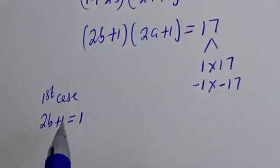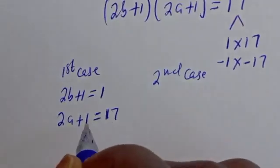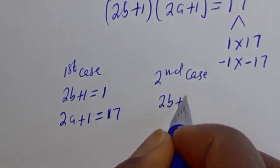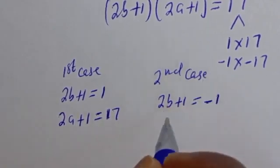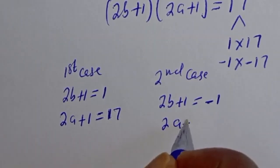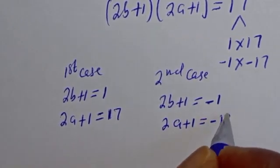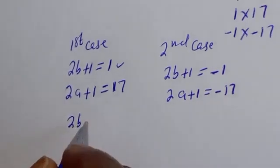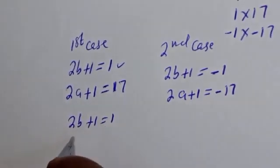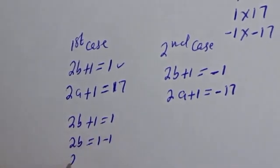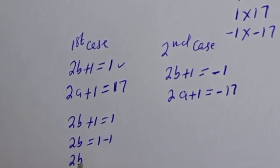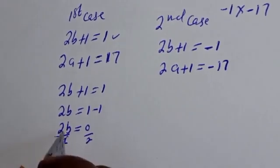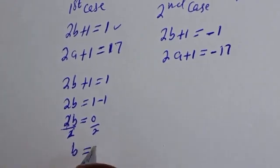The first case: 2b plus 1 is equal to 1 and 2a plus 1 is equal to 17. From the first equation, 2b is equal to 1 minus 1, so 2b is equal to 0. Dividing both sides by 2, b is equal to 0.